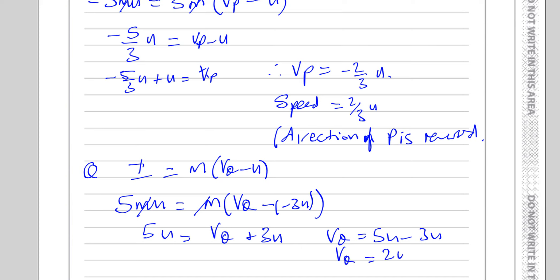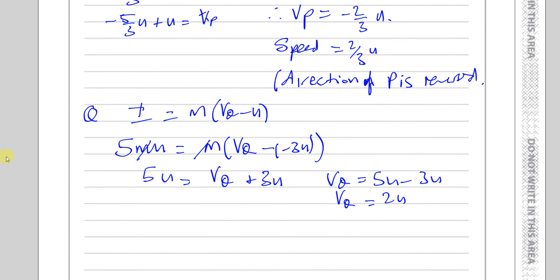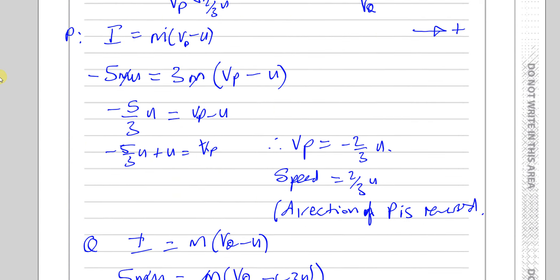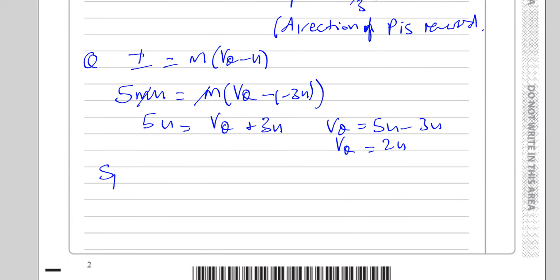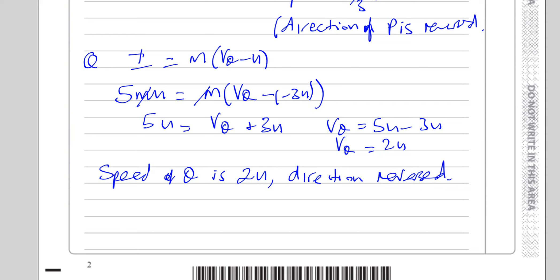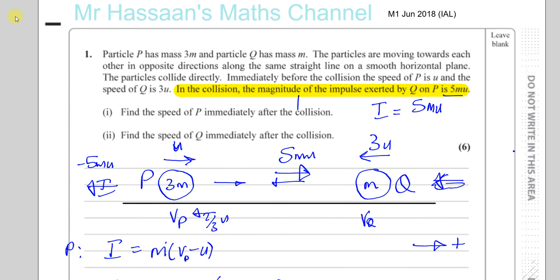Q is again travelling in the opposite direction to what it was travelling before — its direction is reversed. So the speed of Q immediately after the collision is 2u, and its direction is reversed. And there we have the answer to question number 1 from M1 June 2018: the speed of P is 2/3 u for part A, and the speed of Q is 2u for part B.